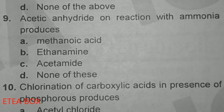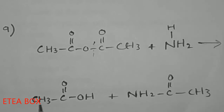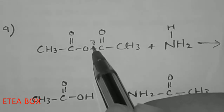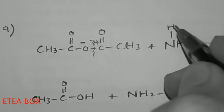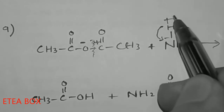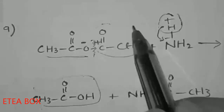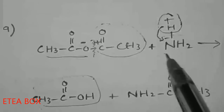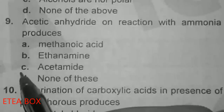Acetic anhydride on reaction with ammonia produces: when acetic anhydride reacts with ammonia, it gives acetic acid and acetamide. When the central bond is broken, oxygen gets a negative charge and the other part gets a positive charge. The positive part attaches to NH₂, forming acetamide, while acetic acid also forms. Option C is the correct one.